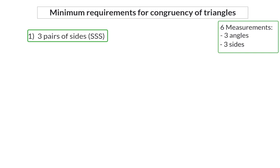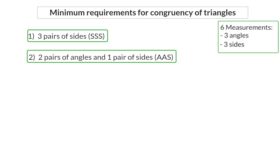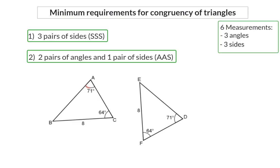The second option of minimum requirements for congruency is when we have two pairs of equal angles and one pair of sides. Because in our example we have two pairs of corresponding angles being equal, as well as one pair of side lengths being the same, we can say these two triangles are congruent. We can now accept that the remaining pair of angles are the same size, and also the remaining sides. So AC, lying in between the 71 and 64 degree angles, will be the same as side FD, and side AB will be the same length as side ED.